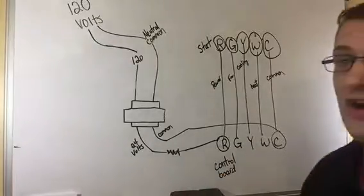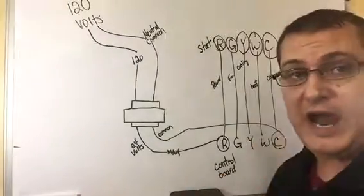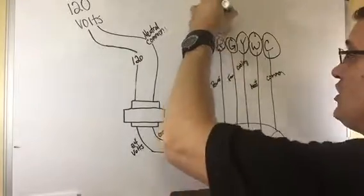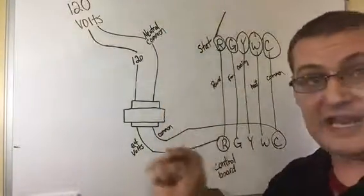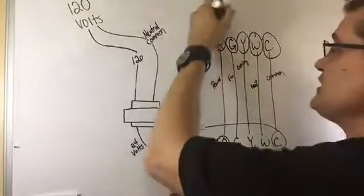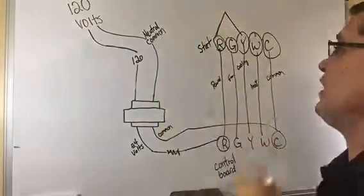If you have a call for Y, for cooling, R, when you flip it to cooling, then you turn the thermostat down. Once it makes the switch to tell the system to come on, it just powers up Y.